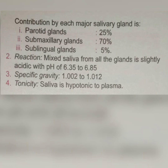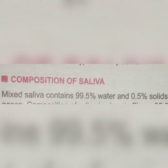Contribution by each major salivary gland: the parotid gland releases about 25% of saliva, the submaxillary gland releases about 70%, and the sublingual gland releases about 5%. The reaction of mixed saliva from all glands is slightly acidic, with a pH of 6.35 to 6.85. The specific gravity is 1.002 to 1.012. The tonicity of saliva is hypotonic to plasma, meaning it possesses more quantity of water than blood.